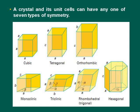A crystal and its unit cell can have any one of seven types of symmetry: cubic, orthorhombic, monoclinic, triclinic, tetragonal, trigonal, and hexagonal — here are the seven types of symmetry.